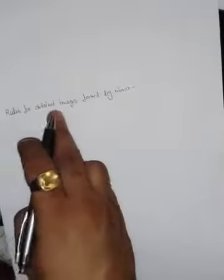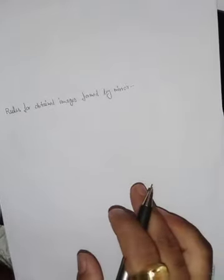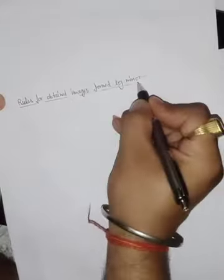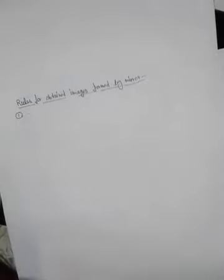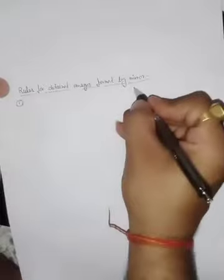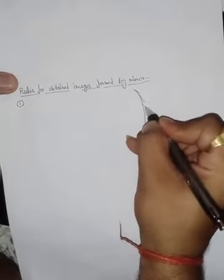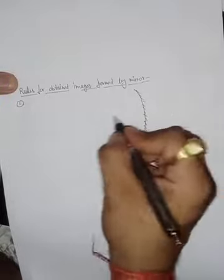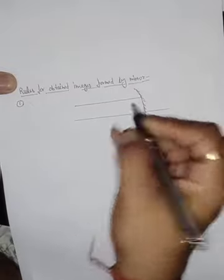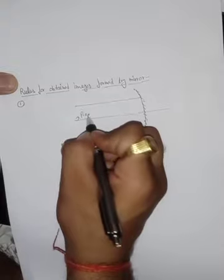Next we have the rules for obtaining images formed by a mirror. In the mirror we have four types of rules. The first and very important rule — for the point of examination — is: when the light rays are coming from infinity, parallel to the principal axis, when the light rays are coming from parallel to the principal axis...